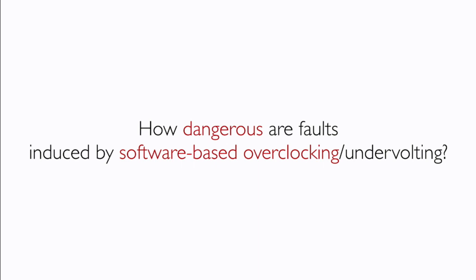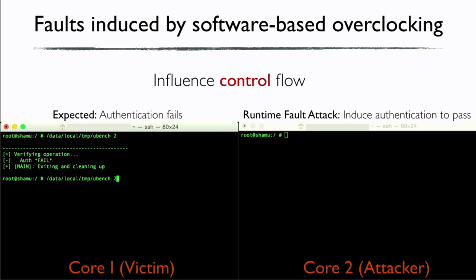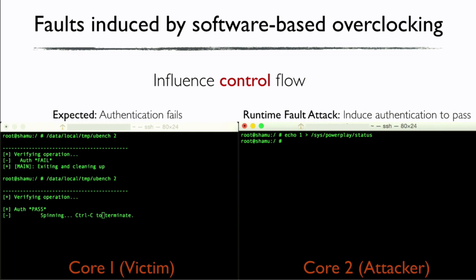To get an initial assessment of security implications, we created two simple victim programs and used our tool to manipulate frequency and voltage. In the first example, we demonstrate how control flow can be influenced. We run a victim program that spin-loops, checks conditions, and fails authentication — the expected behavior. Then, while running it again, as the attacker we increase the frequency all the way up. The victim program behaves very differently: the first run failed authentication, but under overclocking it actually passed. The control flow was influenced.